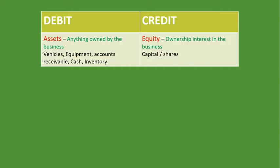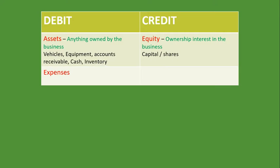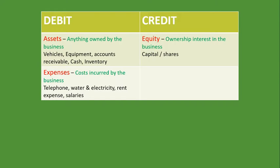What else do you debit? You debit expenses — any expenses that you have. Expenses are costs that are incurred by the business, and whenever you have them, you put them on the debit side. Examples of expenses are telephone, water and electricity, rent expense, and salaries. So if you have 100 rand for water and electricity, you will put water and electricity, 100 rand, on the debit side.